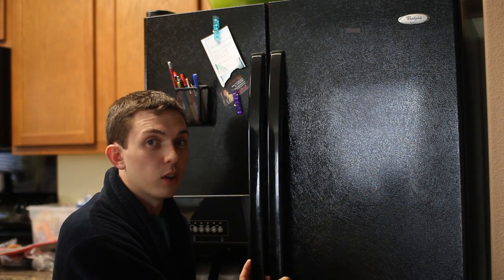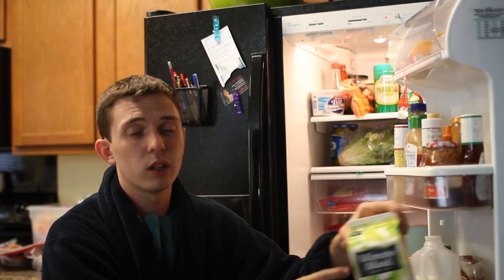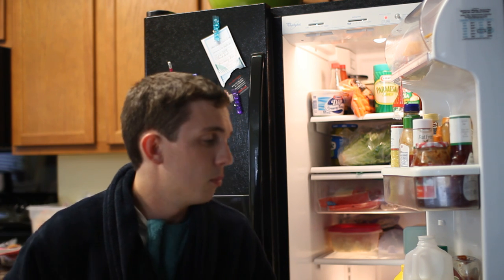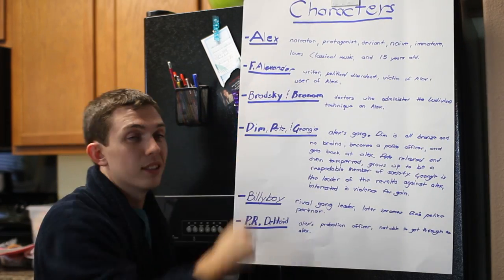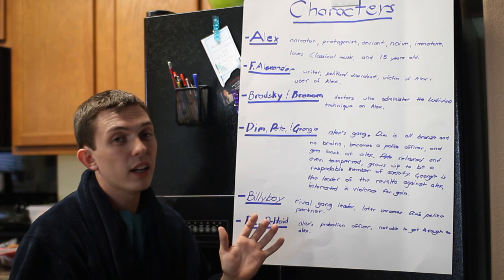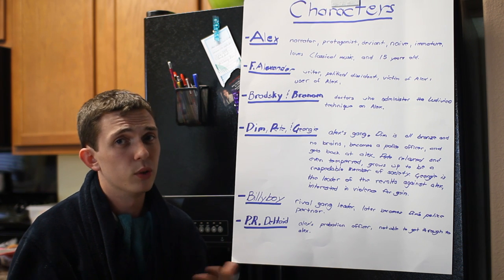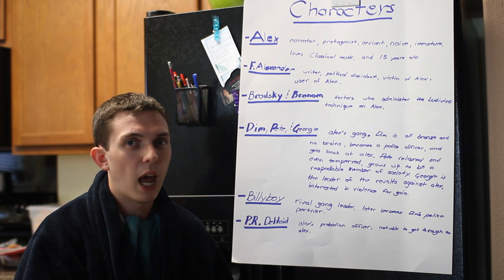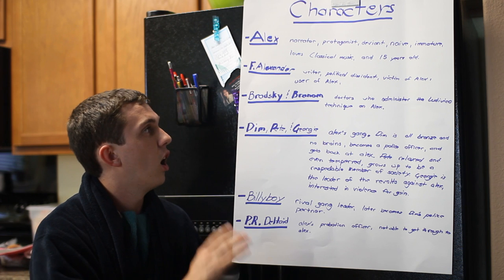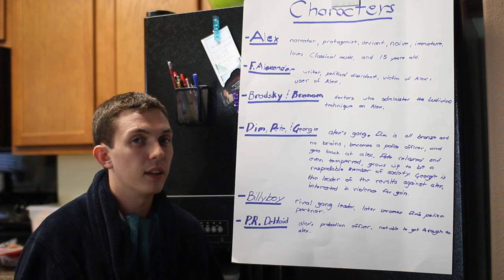To continue our discussion on A Clockwork Orange, we need to talk about characters. There are a few main characters in the work. Main characters include Alex. He is the main character, also the narrator, the protagonist. He's a deviant of society. He's very naive and immature due to the fact that he's only 15 years old. He loves violence — absolutely loves it. He also really loves classical music, and that's very important because it contrasts the beginning and the end of the book.